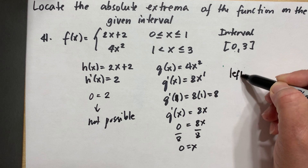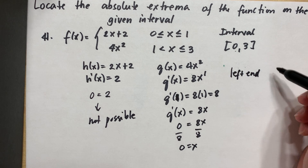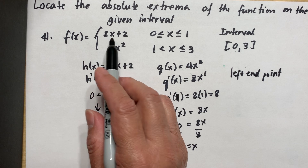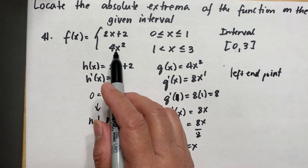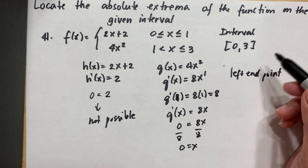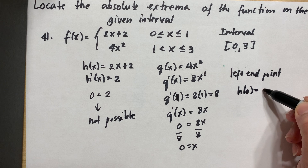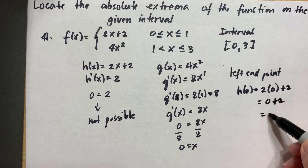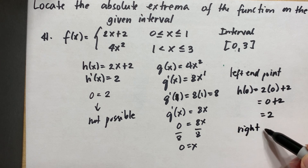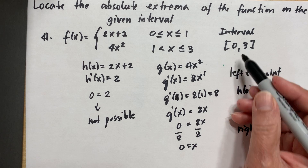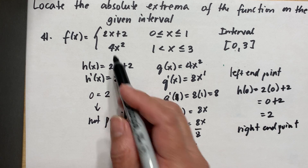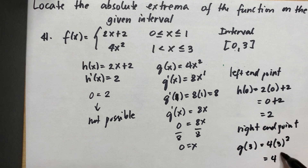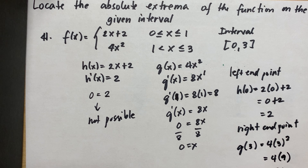Now let's substitute our left endpoint, or critical number, x equal to 0, into the original function 2x plus 2, because 4x squared doesn't apply at x equal to 0. So h(0) equals 2 times 0 plus 2, which equals 0 plus 2, therefore equal to 2. For the right endpoint x equal to 3, substitute into 4x squared: 4 times 3 squared equals 4 times 9, which equals 36.